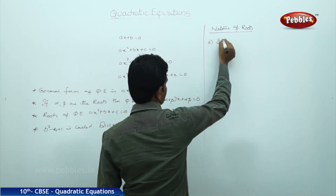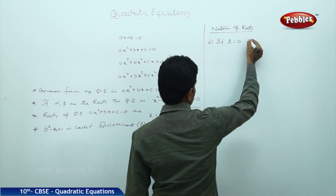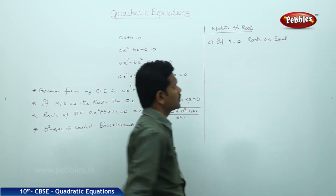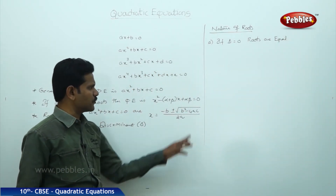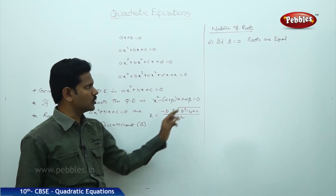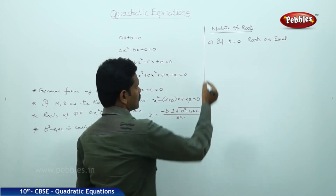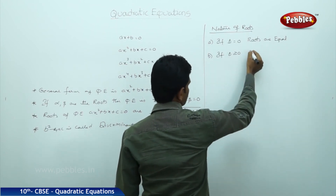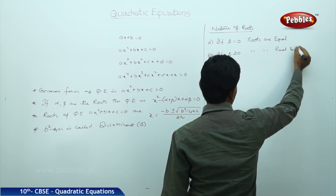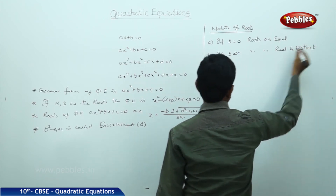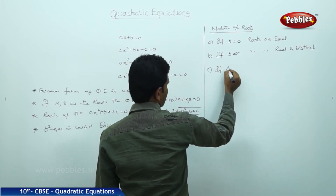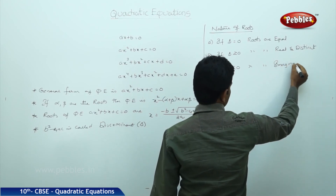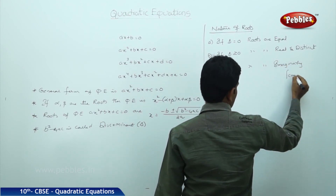If delta equals 0, the roots are equal. That is, if the discriminant value B squared minus 4AC equals 0, then the roots are equal. If delta is greater than 0, then the roots are real and distinct. If delta is less than 0, then the roots are imaginary, which are nothing but complex roots.